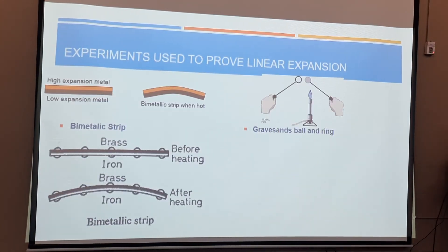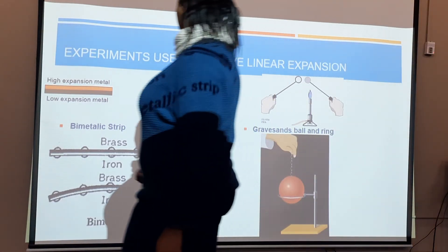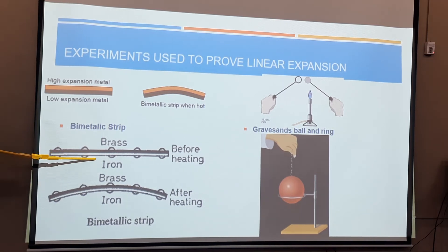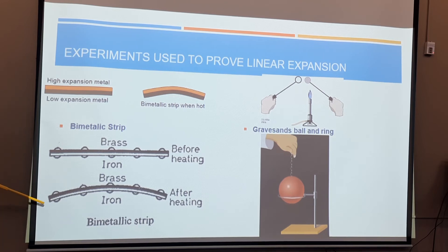These are the two experiments we are going to look at — a video will be sent for each. The bimetallic strip is made of two dissimilar metals, in this case brass and iron joined together. When you heat the strip, both metals expand, but because they are not the same type, their expansion rates differ. One metal becomes much longer than the other, causing the strip to bend towards the direction of the shorter one.